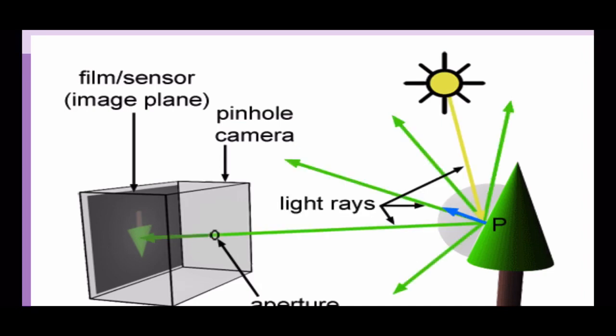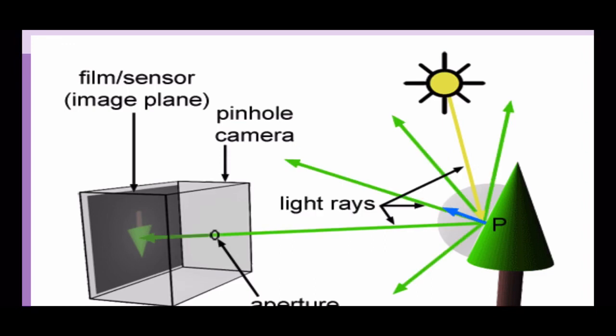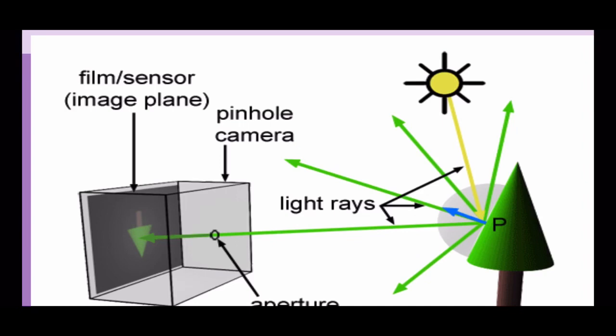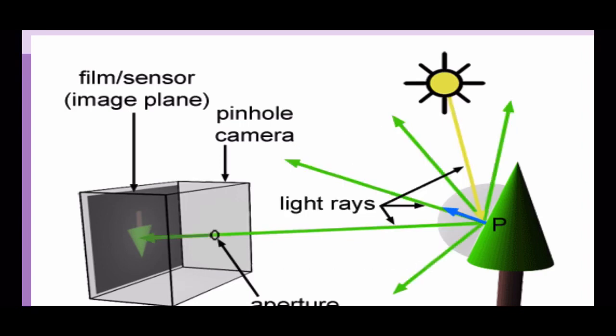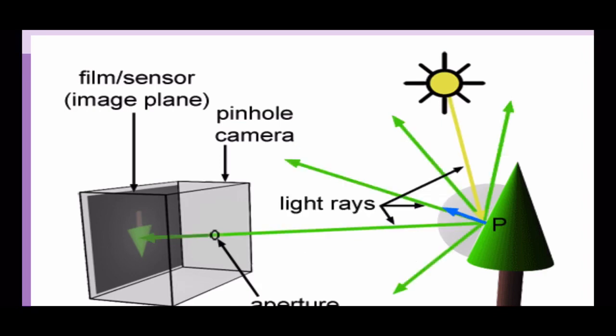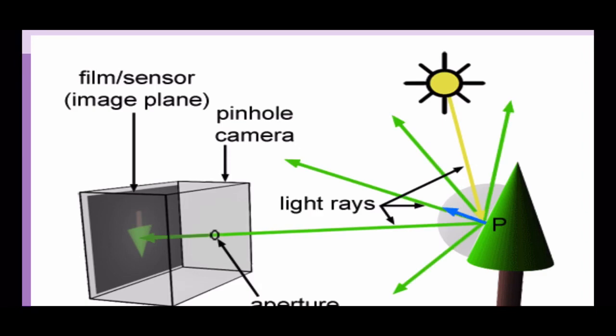It is a real image. There are two types of images: virtual image and real image. A virtual image cannot be obtained on the screen while a real image can be obtained on the screen. You can also obtain numerous images by making several holes in the pinhole camera.